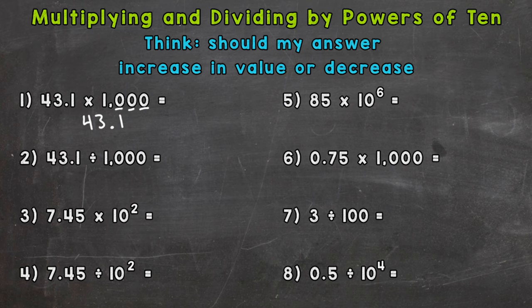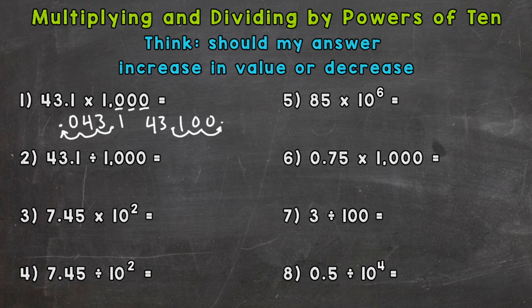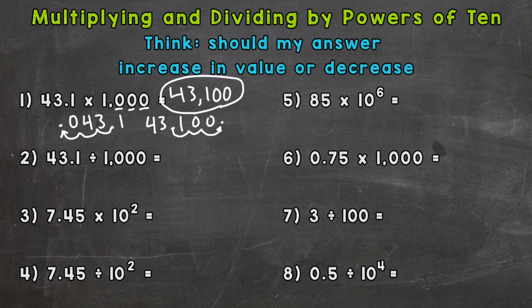Now we're multiplying, so we need to move the decimal to the right. We're multiplying something by 1,000, so our answer should increase in value. If we accidentally move the decimal to the left — 1, 2, 3 — we would get 431 ten-thousandths, which is a very small number and doesn't make sense for multiplying by 1,000. Moving it to the right: 1, 2, 3 — fill with two zeros — and our actual answer is 43,100.